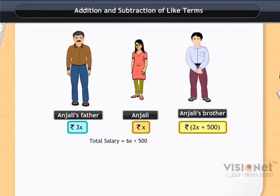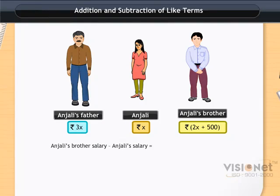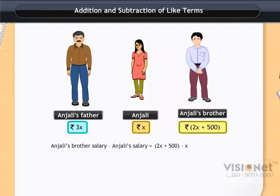Now, can we find out how much more salary than Anjali her brother is getting? Of course we can. For that, we need to subtract Anjali's salary from that of her brother. Anjali's brother's salary is 2x plus 500, and that of Anjali is x. So we subtract them: 2x plus 500 minus x.